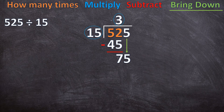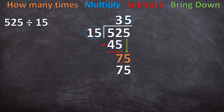Now we start all over again from the first step. How many times can 15 go into 75? 15 can go five times into 75. And 5 times 15 is 75. Now we subtract — 75 minus 75 is zero. There's nothing else to bring down, so this is where our long division ends. There is no remainder — we ended with a zero. So our answer is 35. 525 divided by 15 is equal to 35.